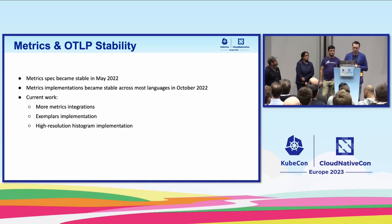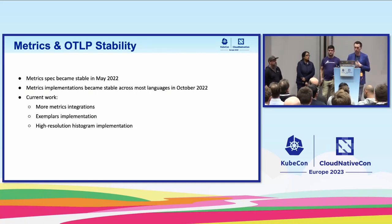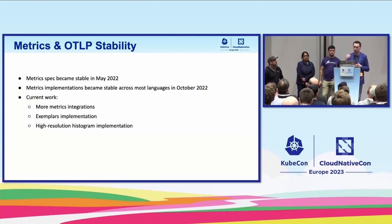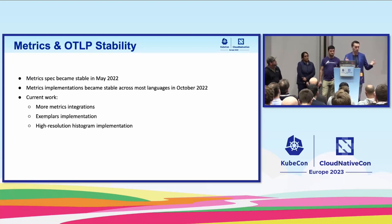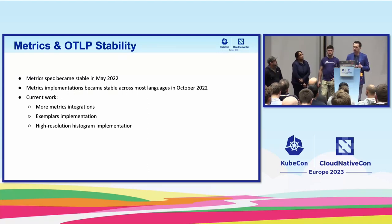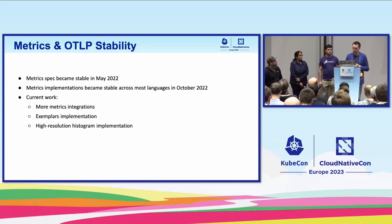We've achieved metric stability, and implementations of metrics across most languages are now at 1.0. Go just hit or is about to hit 1.0, and we've already achieved that for Java, Node.js, Python, and others. There's still more work on metrics — we are building more integrations for more technologies since metrics is fairly new, and we want to provide a nice turnkey experience. There's also work needed on implementing exemplars, which was explicitly out of scope for 1.0, and we still need to finish implementations for high-resolution histograms.